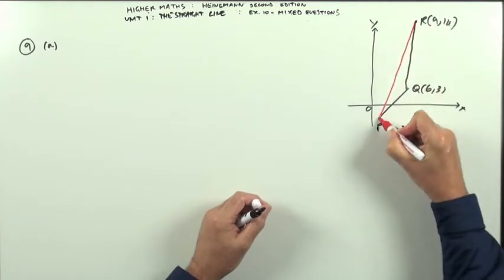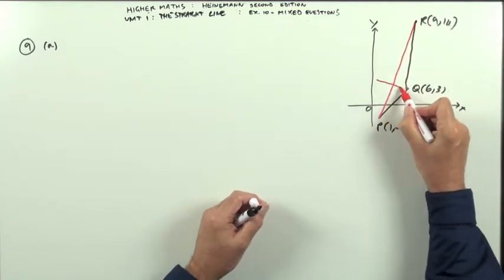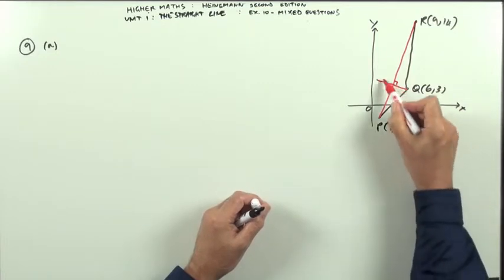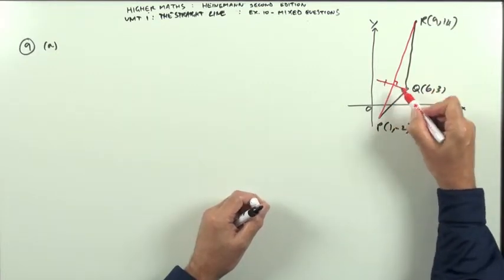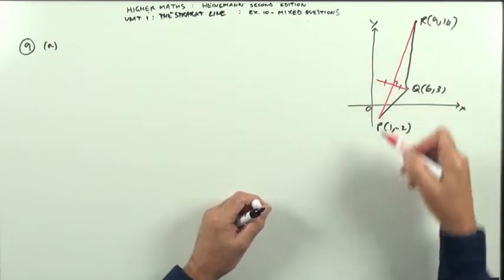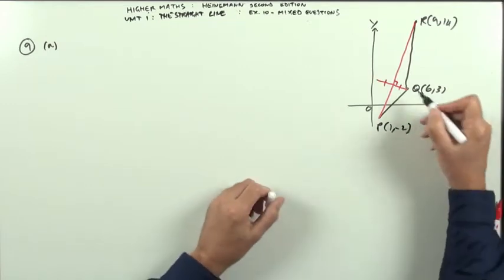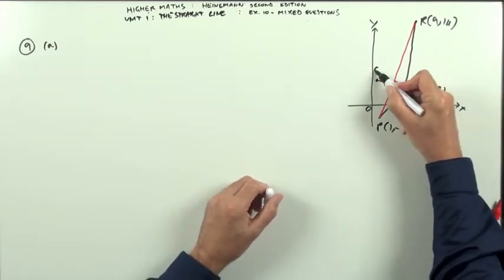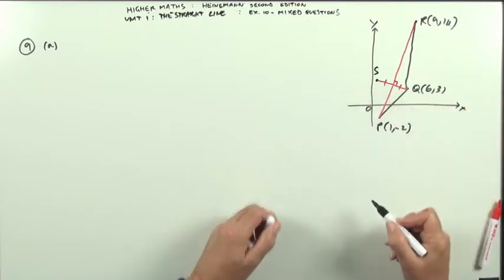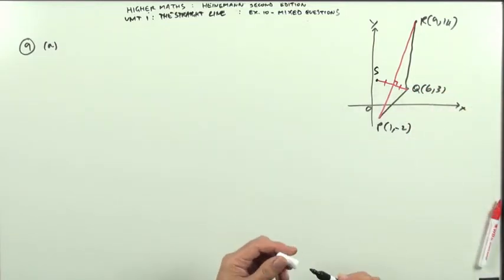You know that in a kite, the diagonals cross at right angles and the shorter diagonal is bisected by the longer diagonal. So that other point should be round about there. That should be the point S. So I'm looking for this point here.